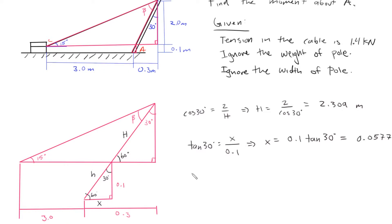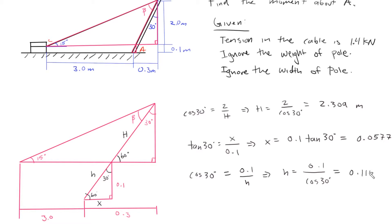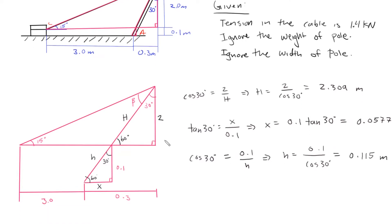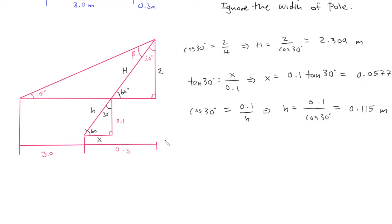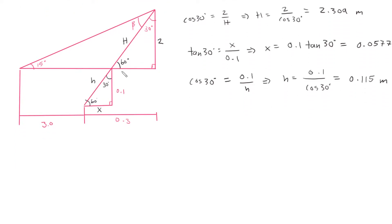We can also define the small hypotenuse h using this right triangle: cosine of 30 equals 0.1 divided by h, so h equals 0.1 divided by cosine of 30, which equals 0.115 meters. Now that we have all these values we can work toward solving this problem — but we still have to find angle beta, so I'm going to draw that triangle again.